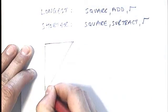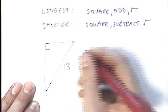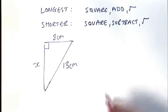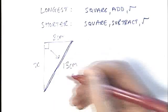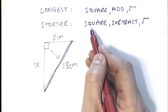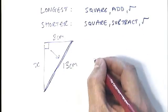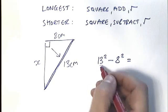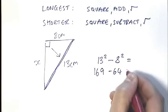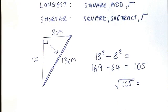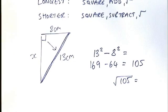Here's a right-angled triangle with sides 13 cm, 8 cm, and x. We need to find x. The longest side is 13 — I already know that, so I must be finding a shorter side. Following the subtract rule: square the numbers starting with the biggest — 13² = 169, subtract 8² = 64, giving 105. Then square root 105 to get the answer. Subtraction applies whenever you're finding one of the shorter sides.